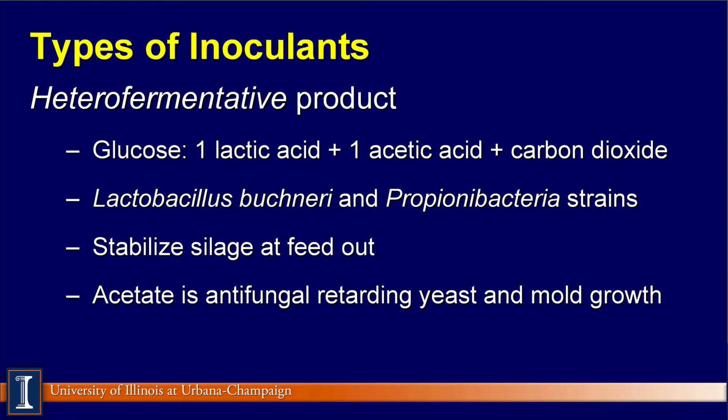The second type is a heterofermentative product. In this case, one mole of glucose breaks down to one lactic acid, one acetic acid, and carbon dioxide. We lose some carbon there that's no longer in the feed. Lactobacillus buchneri and Propionibacter strains are typical of this category. These products stabilize silage at feed-out and avoid secondary fermentation. Acetic acid is an antifungal product which retards yeast growth, and yeast converts lactic acid, which otherwise allows mold growth.